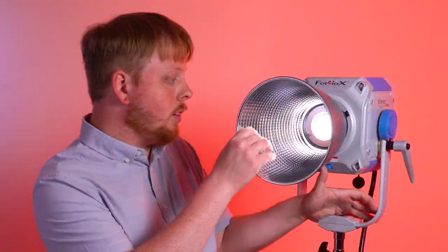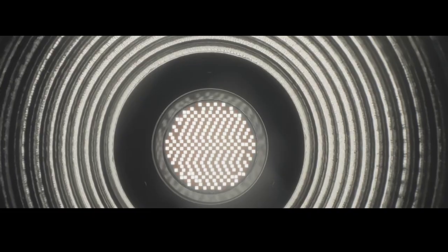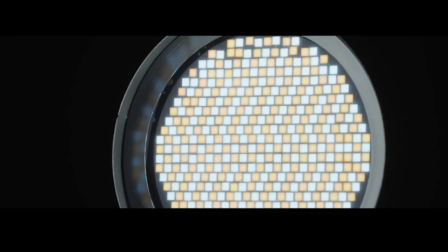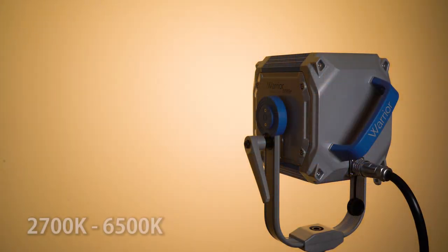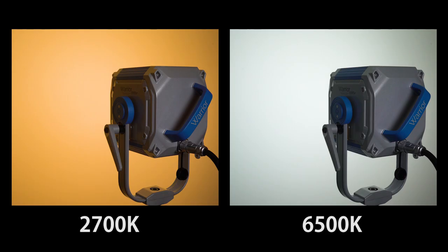Let's remove the reflector for a second here. As you can see, we've got beautiful COB LEDs and these are bi-color LEDs, which means you can set the light from 2700K tungsten to 6500K daylight for a warm to cool look.